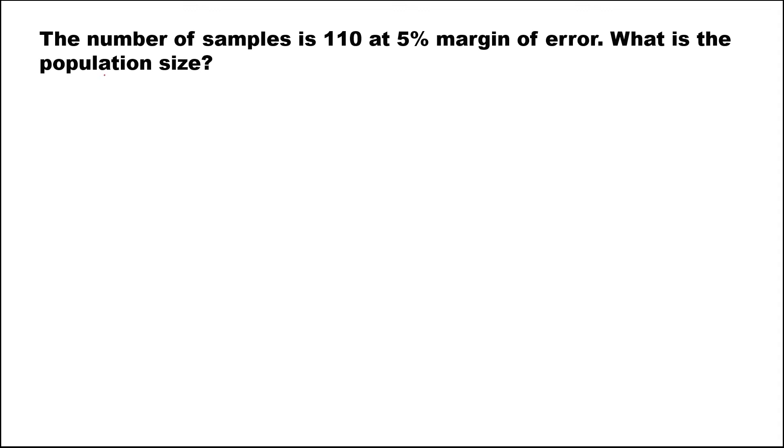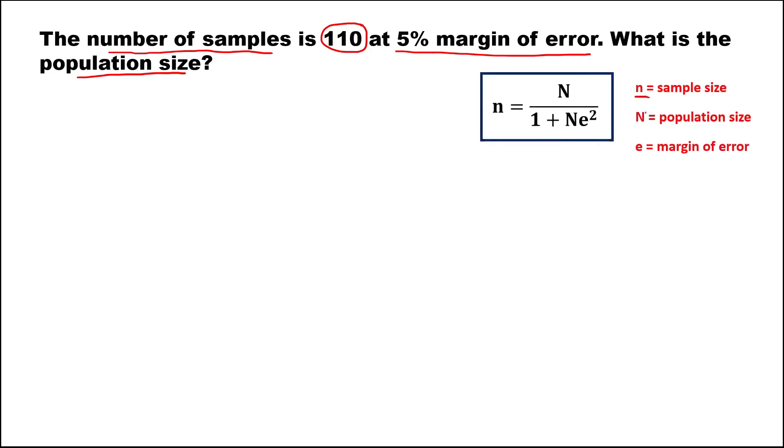For this problem to find the population size, given the number of samples, that's 110, at 5% margin of error. From Sloven's formula, where small n is the sample size, big N is the population size, and E is the margin of error.